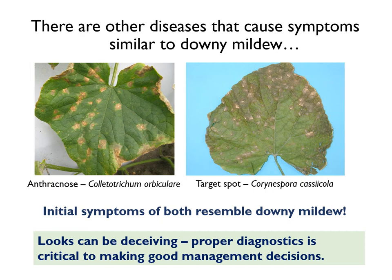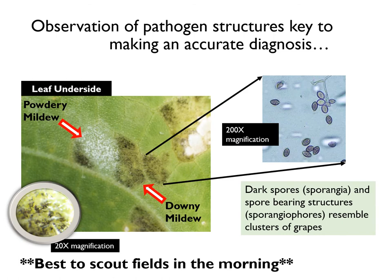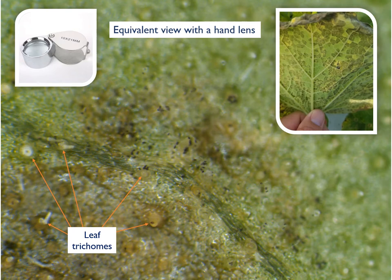Even on cucumber there are fungal diseases that can be mistaken for downy mildew. That's why it is important to check lesions for the distinct sporangia and sporangiophores that are characteristic of P. cubensis. These resemble clusters of grapes sticking up from the leaf surface and are about a third of the size of trichomes or leaf hairs. Not everyone has access to a microscope, but with a little practice, P. cubensis can be observed with a hand lens. You can see the numerous black sporangia dotting the leaf surface, along with some of the larger leaf trichomes for reference.